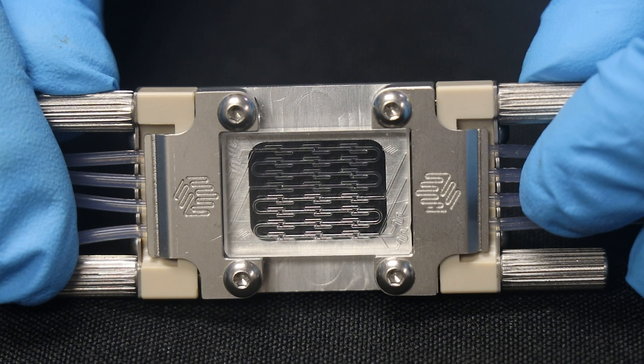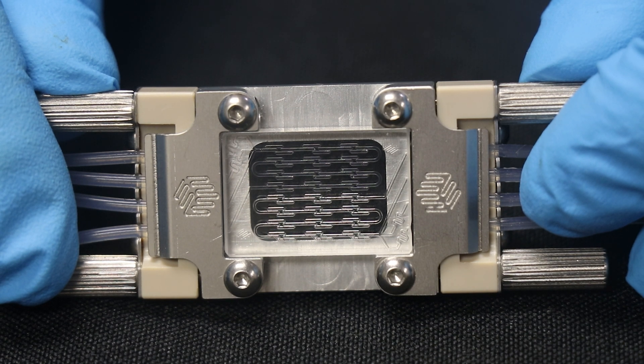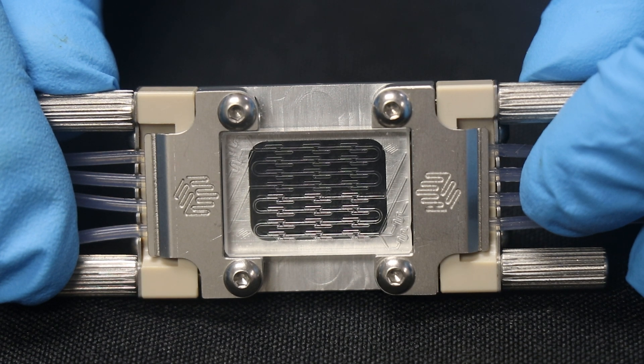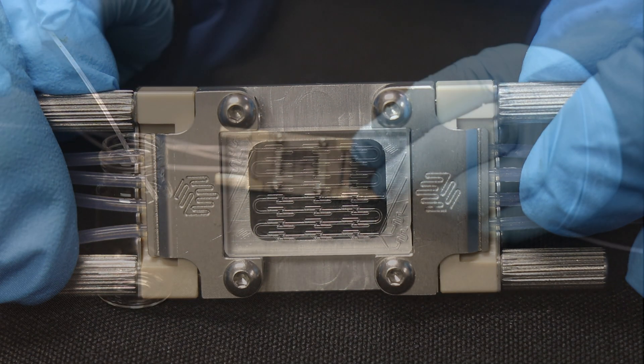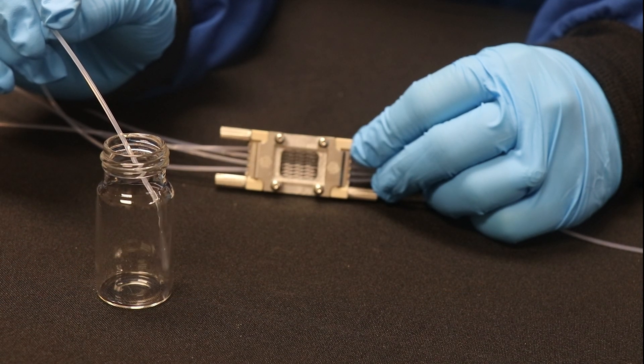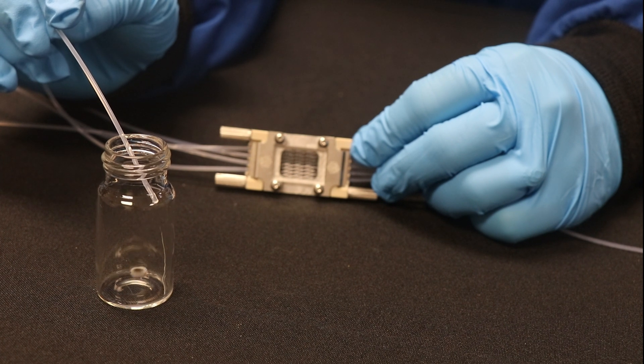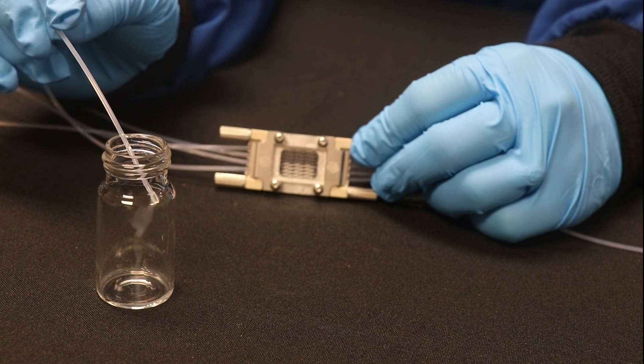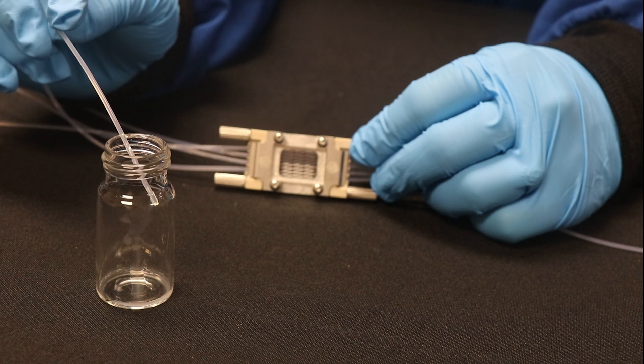Other common processing parameters include total flow rate through the system and flow rate ratio, which refers to the ratio of the aqueous to organic phases. The process you see here has a flow rate ratio of three to one and a total flow rate of about one milliliter per minute. The resultant product contains lipids at 12 milligrams per milliliter and 25 percent total ethanol.